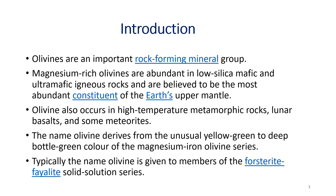Olivines are very important rock-forming minerals and they contain magnesium and iron. Magnesium-rich olivines are abundant in low-silica mafic and ultramafic igneous rocks and are considered the most abundant constituent of the Earth's upper mantle. Olivine is also found in high-temperature metamorphic rocks, lunar basalts, and some meteorites. Meteorites are extraterrestrial material which hit the Earth.